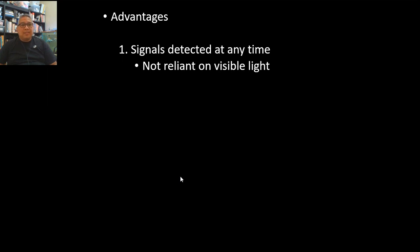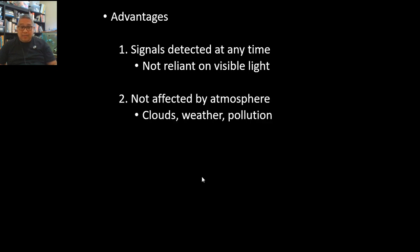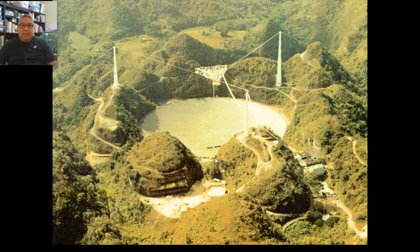The advantages are: you don't need the sun for this one, unlike optical devices. Just put the radio telescope there and you're good. Signals can be detected at any time—24/7, 365 days a year. Not reliant on visible light, not affected by the atmosphere, clouds, weather, or pollution. Can be made very large because it's not a convex lens, not made of fragile glass, so you can create a huge one like the size of a small mountain.